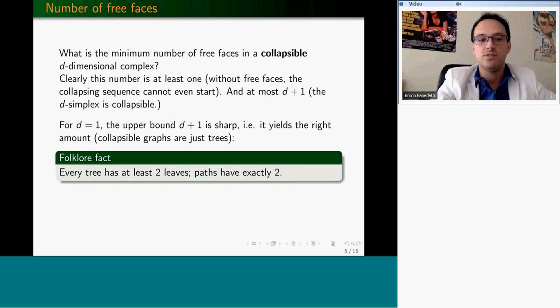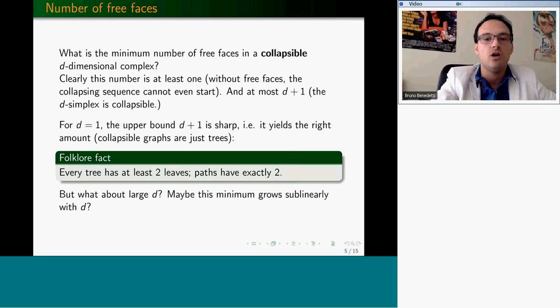The main question I want to address is: what about the minimum number of free faces a collapsible d-dimensional complex can have? Clearly this number is at least one, because if you have no free faces, you cannot even start. And at most it is d plus one, because the d-simplex is collapsible with d plus one free faces.